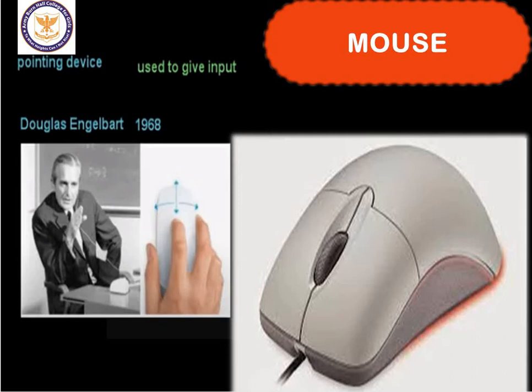The mouse was invented by Douglas Engelbart for the first time in 1964. Regarding the structure of a mouse, it comes in various shapes and sizes, but all are designed to fit either the left or right hand of a human. The standard mouse has basically two buttons. The front of the mouse casing contains one wheel and two or three buttons, which can be clicked or double-clicked to perform different tasks on the screen.